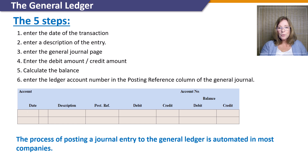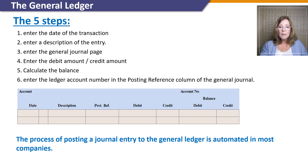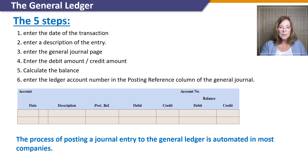The process of posting a journal entry to the general ledger consists of these five steps. On the ledger form, enter the date of the transaction. Enter a description of the entry if necessary. Enter the general journal page in the posting reference column. Enter the debit amount in the debit column or the credit amount in the credit column. Compute the balance and enter it into the debit balance column if the balance is a debit, or the credit balance column if the balance is a credit. On the general journal, enter the ledger account number in the posting reference column.